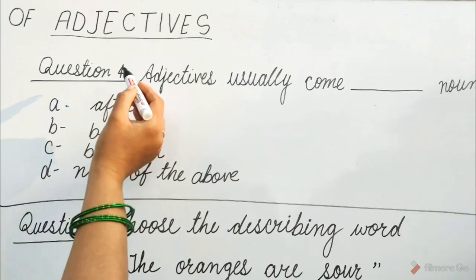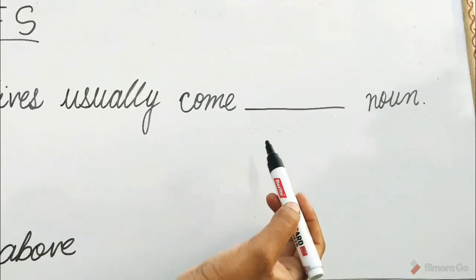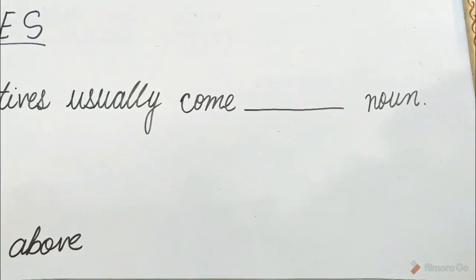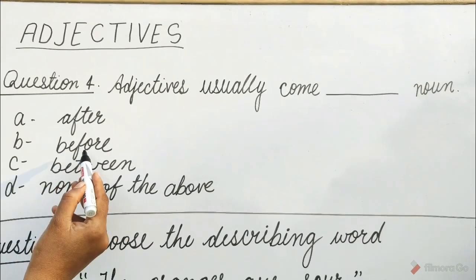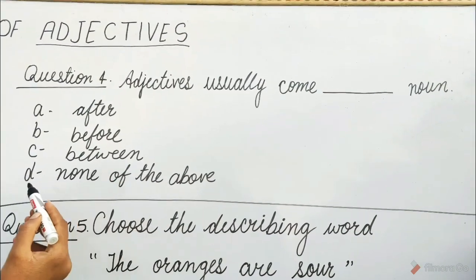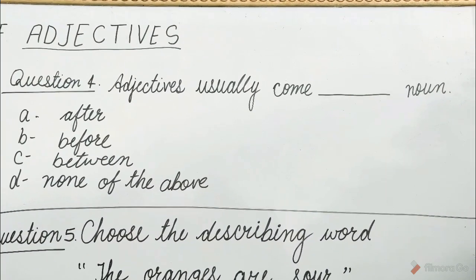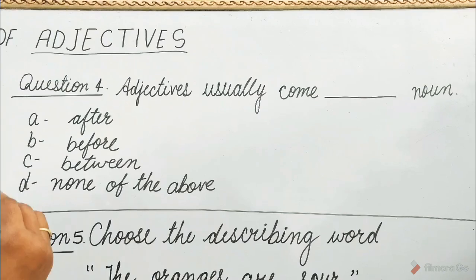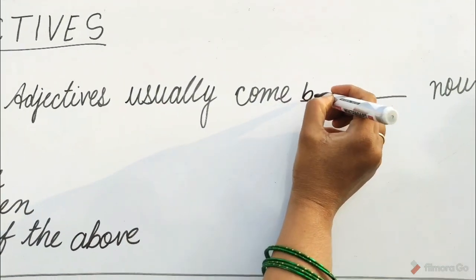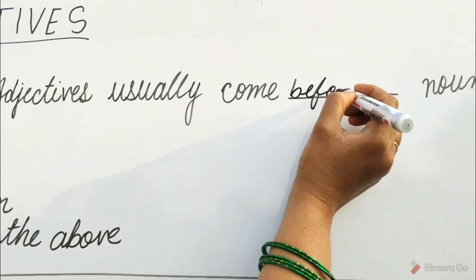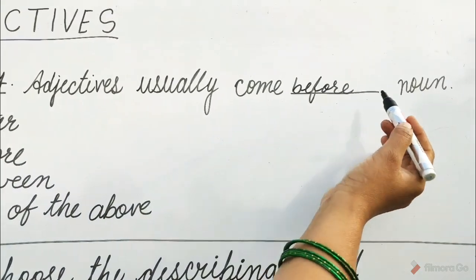Question 4: Adjectives usually come ___ noun. Options are A. After, B. Before, C. Between, D. None of the above. Guess children, which option will be correct? Yes, it is B — Before. Adjectives usually come before noun.